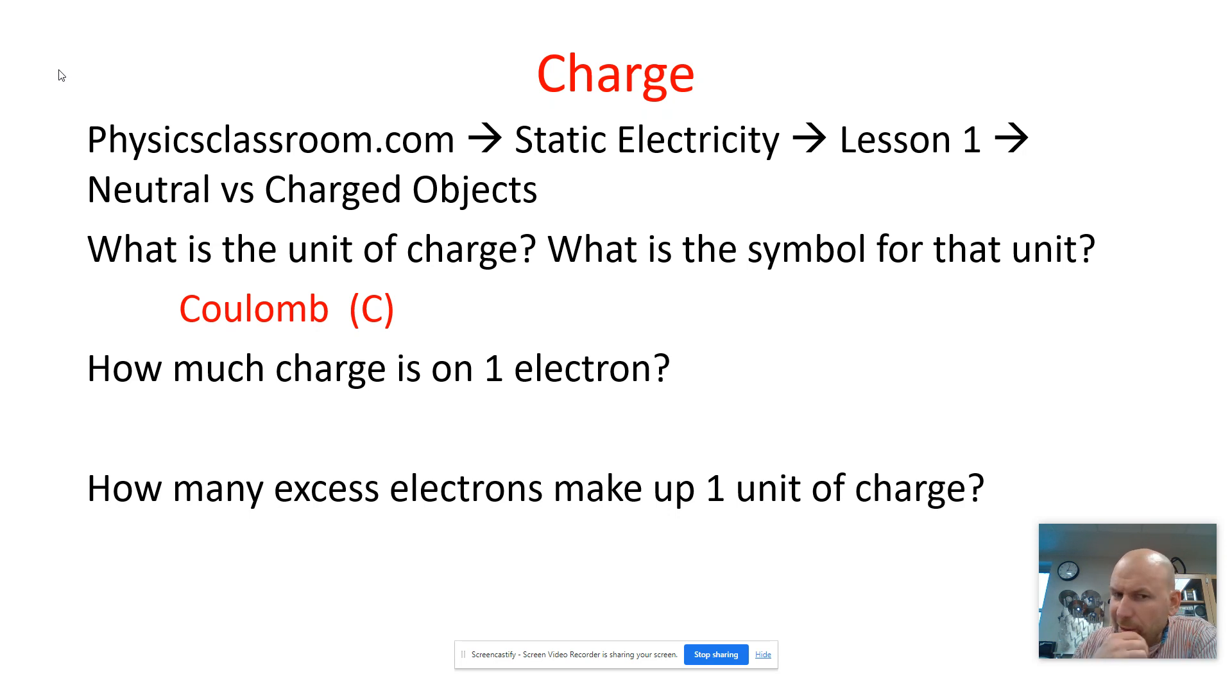In chemistry, you counted electrons. So how does a charge of an electron compare to a coulomb? Well, an electron is really small. It's a charge of negative 1.6 times 10 to the negative 19th coulombs. So how many excess electrons make up 1 coulomb?